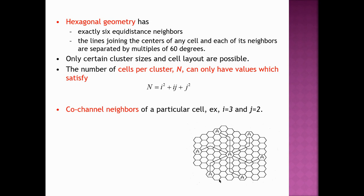Cells that use the same frequency are called co-channel neighbors. To find co-channel cells in a hexagonal layout, from a reference cell move i cells in any one direction, then turn 60 degrees counterclockwise, then move j cells. For example with i = 3 and j = 2: move 3 cells (1, 2, 3), turn 60 degrees counterclockwise, then move 2 cells, and you reach the co-channel cell. These two cells using the same frequency are called co-channel neighbors.